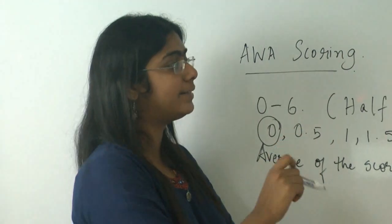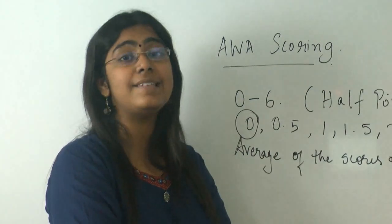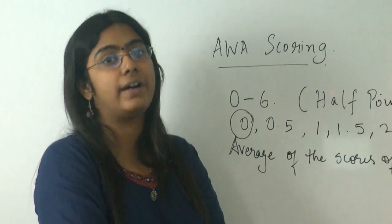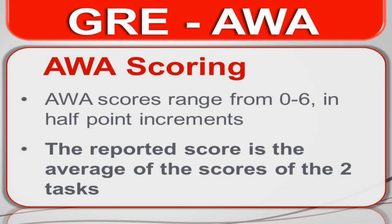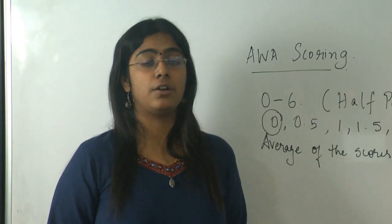Of these remember that 4 and above are considered good. So please aim for around 5. The reported score is the average of the scores of the two tasks. Let's look into the score level descriptions next.